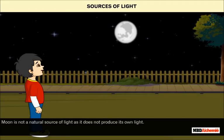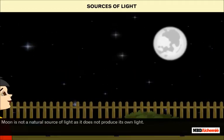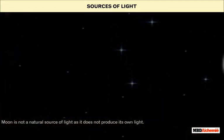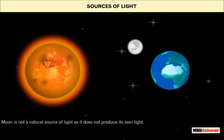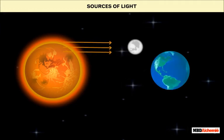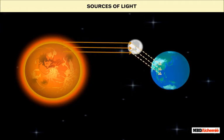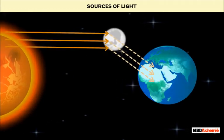Moon is not a natural source of light as it does not produce its own light. The sunlight that falls on it makes it look bright.